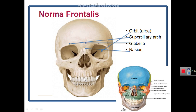Now we will describe looking at the skull from the front. The skull without the mandible is called the cranium, and the term skull refers to the cranium plus the mandible. The skull with the mandible is formed of 22 bones, so the cranium is formed of 21 bones.